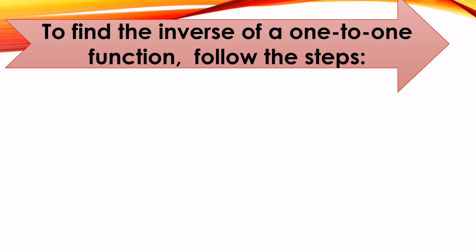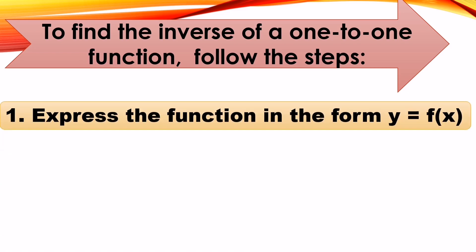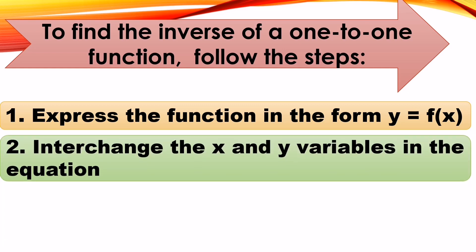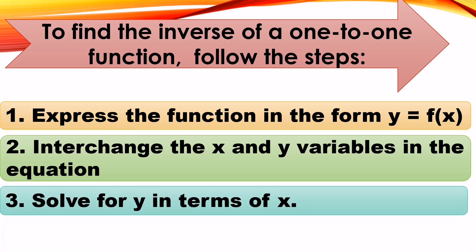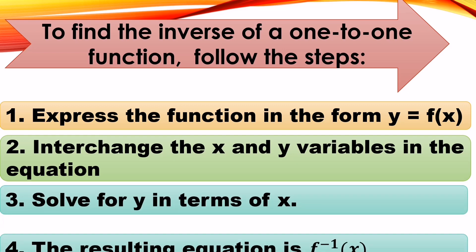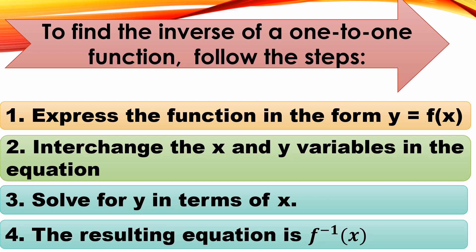To find the inverse of a one-to-one function given an equation, follow these steps: Step one, express the function in the form y = f(x), changing f(x) into y. Step two, interchange the x and y variables — the old y becomes x and the old x becomes y. Then solve for y in terms of x. The resulting equation is f⁻¹(x).